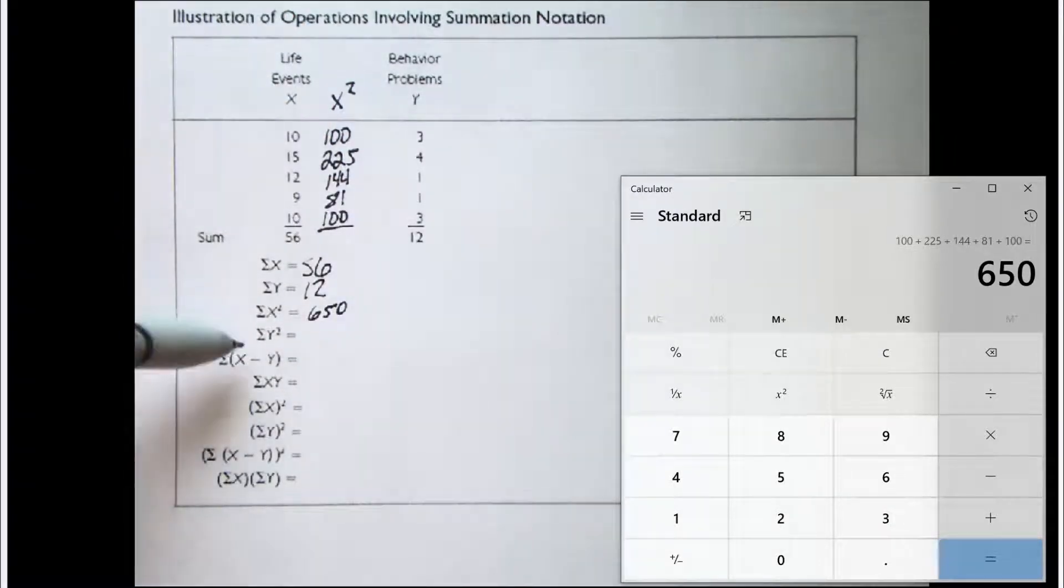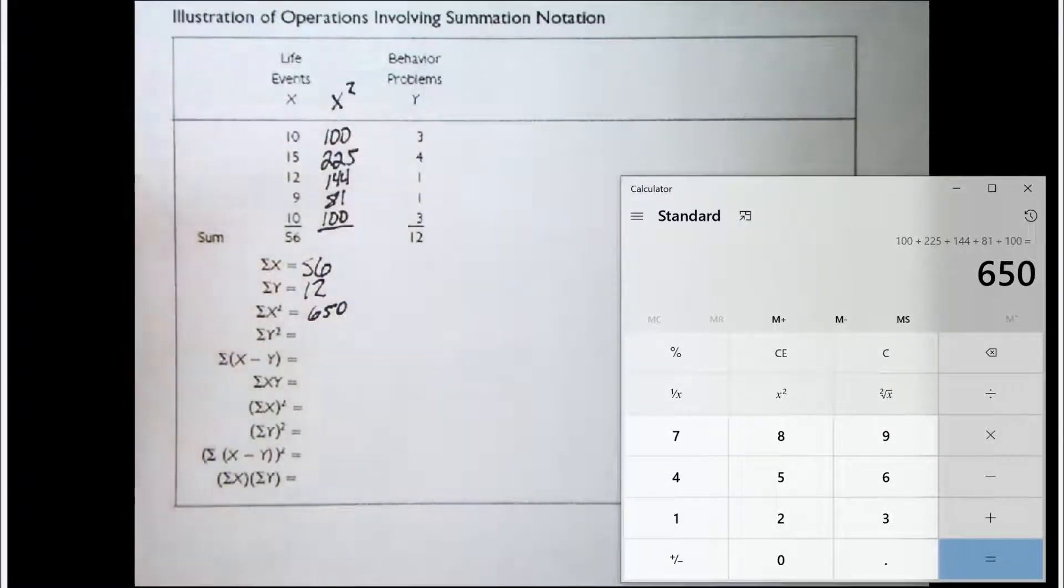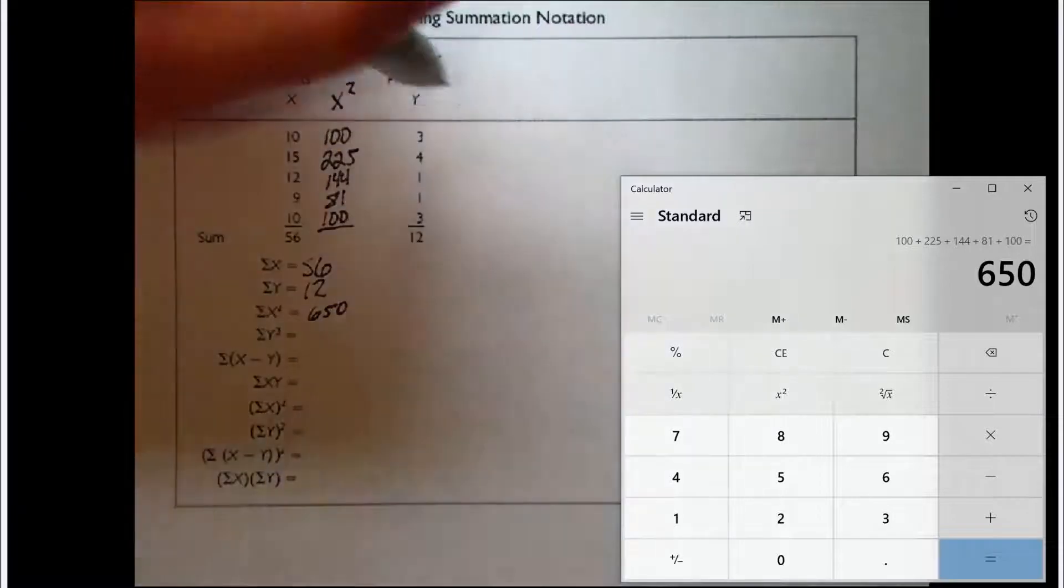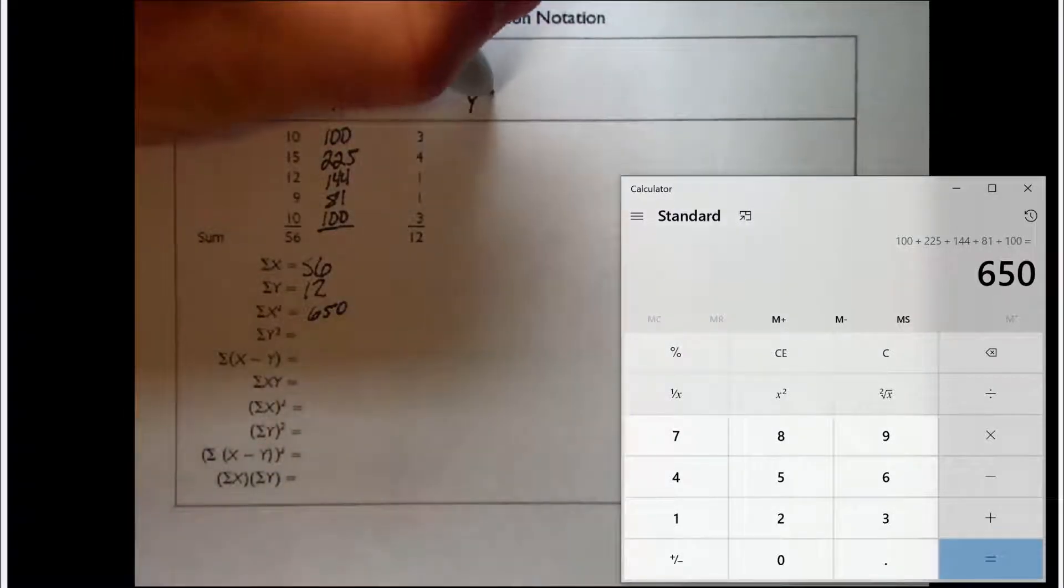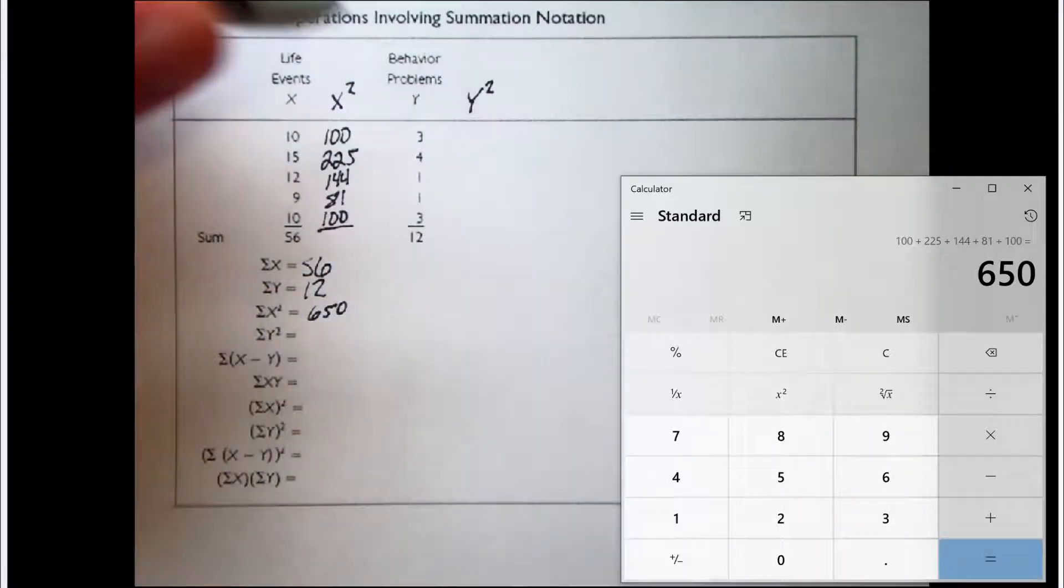All right, let's move on to the next one, the sum of Y squared. Here we have a column of Y values. What we're being asked to sum up are squared Y values. So we ask ourselves, do we need to add a column? And we do. So for step two, we're going to create a column labeled Y squared. Of course, now what we want to do is square each one of these Y values.